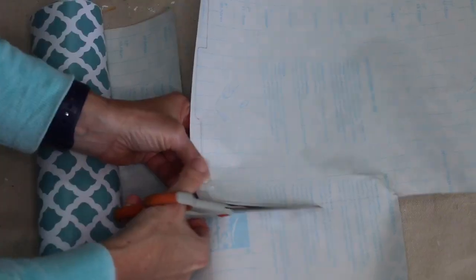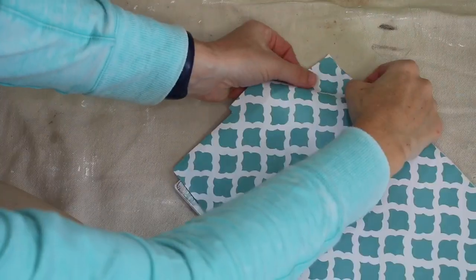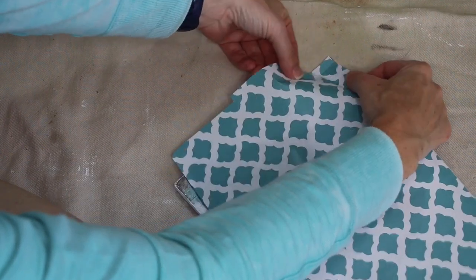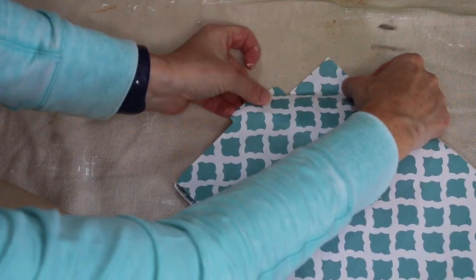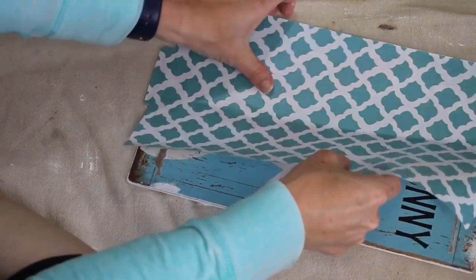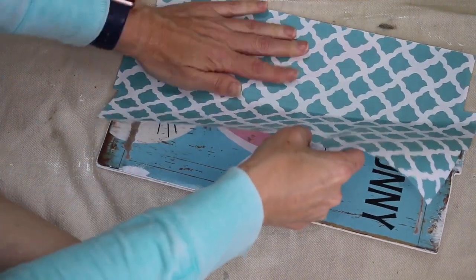Once I had it traced out, I went ahead and I cut out my tracing and then I placed my contact paper onto the back, just peeling off a little bit at a time and placing it on, trying to avoid any bubbling as I went. The nice thing is that if you do make a little mistake, you can kind of pull it up and place it back down.